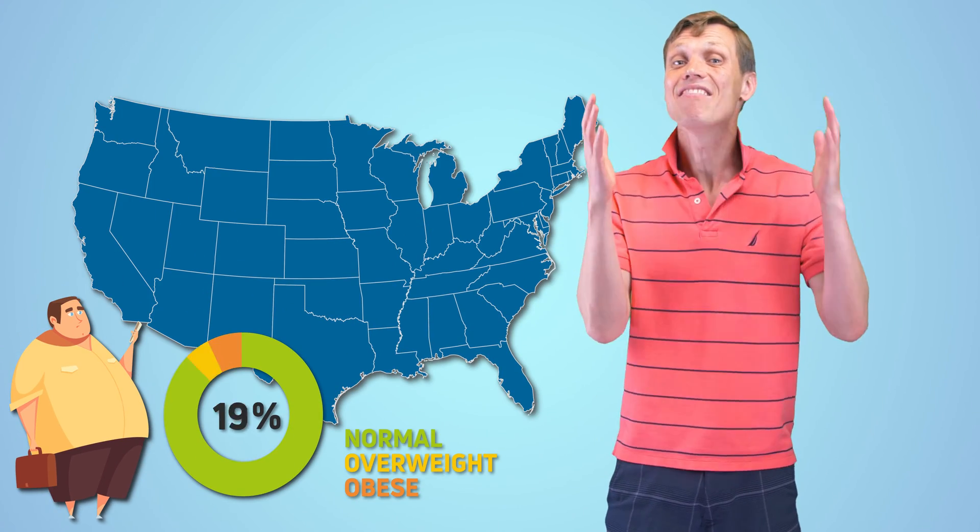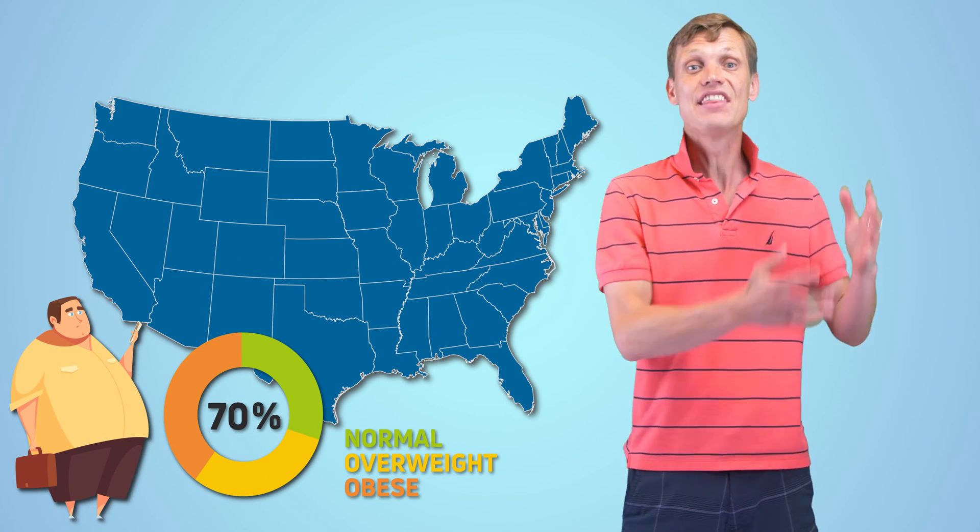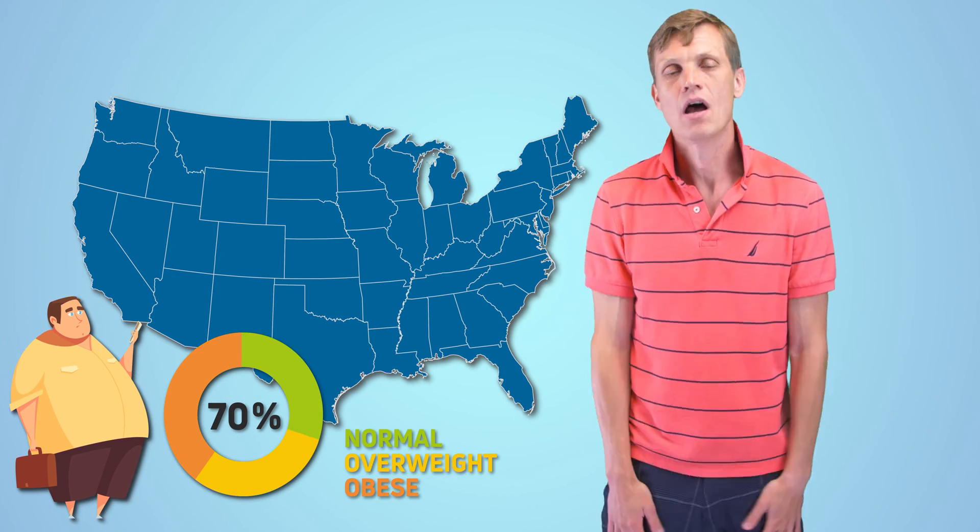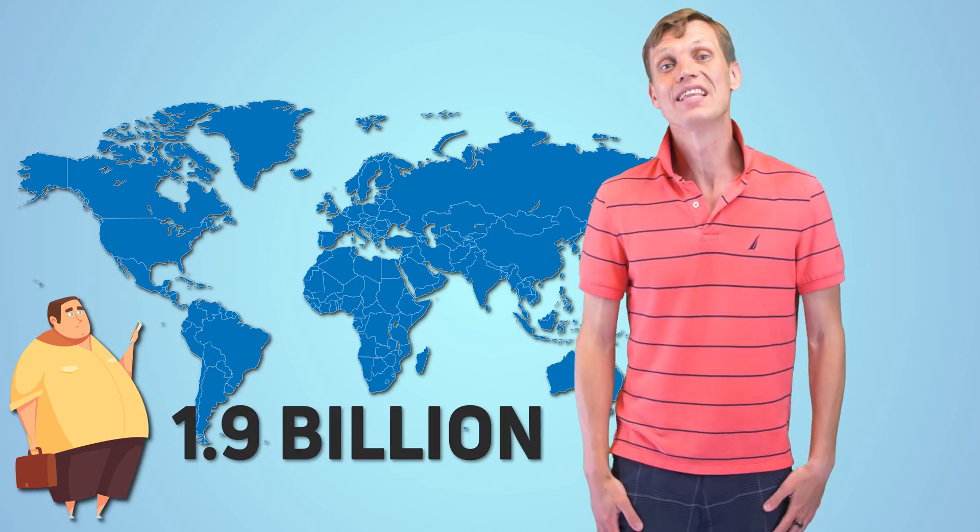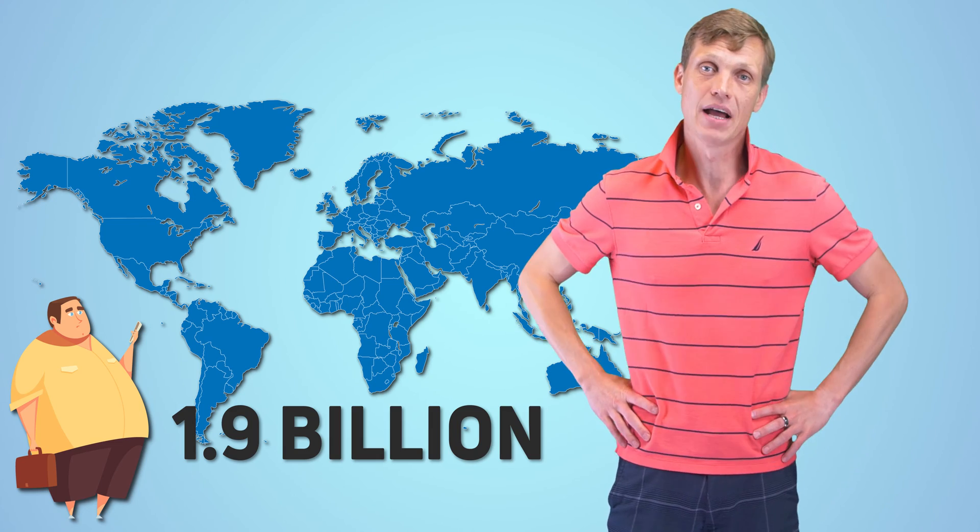Is obesity a common thing? You better believe me. Very common. In the United States about 70% of adults are either overweight or obese. On a worldwide scale, 1.9 billion adults over the age of 18 are overweight. It's quite depressing.